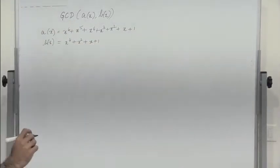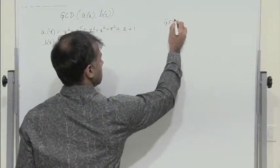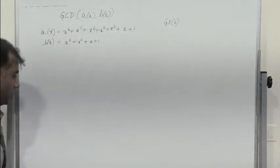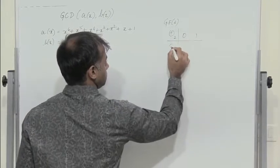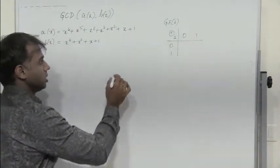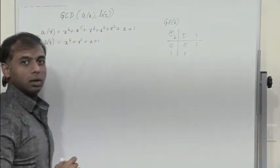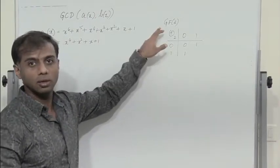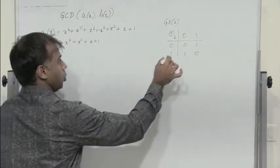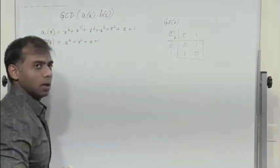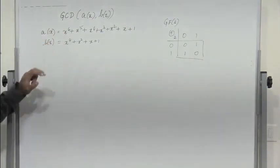We need to find the GCD of A of x and B of x. All operations are performed in GF(2), which means we perform addition in mod 2. So: 0+0=0, 0+1=1, 1+0=1, and 1+1=2, but 2 in mod 2 is 0. This is the arithmetic we will be using in GF(2) to find the GCD of polynomials A of x and B of x.